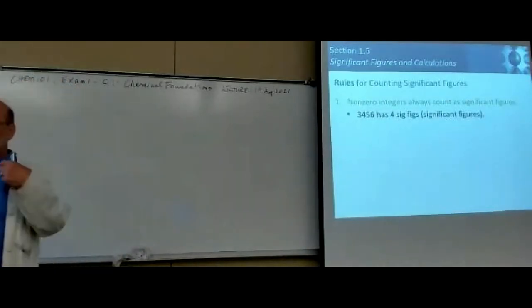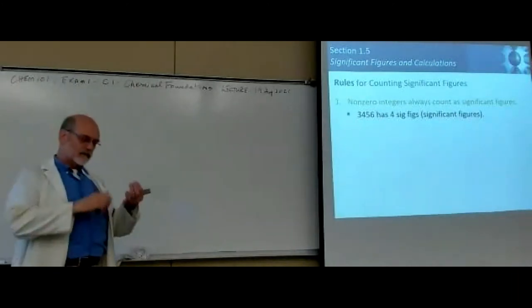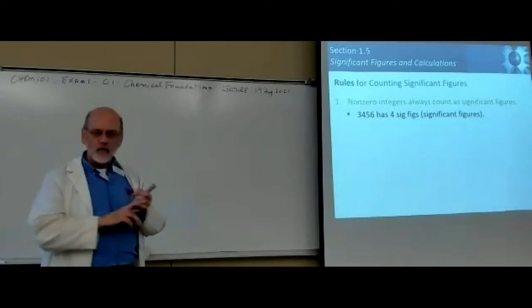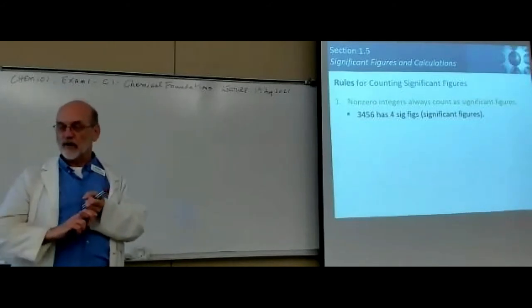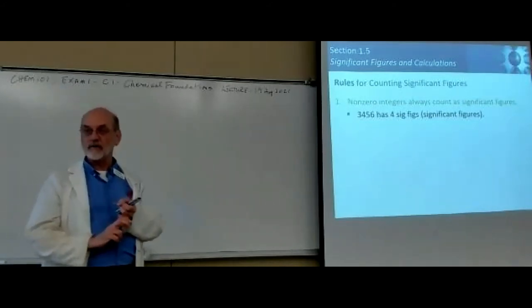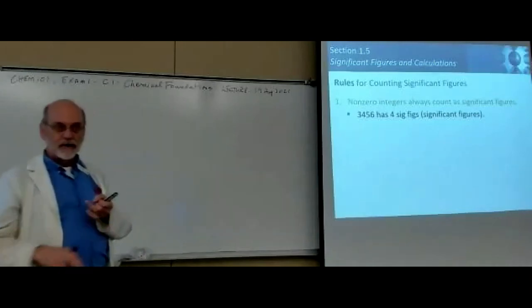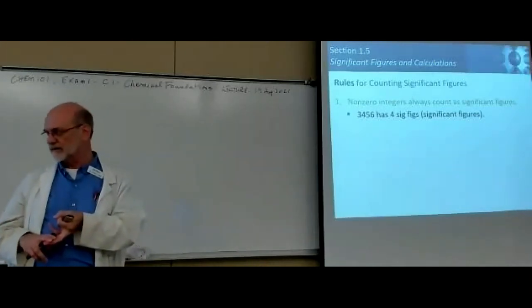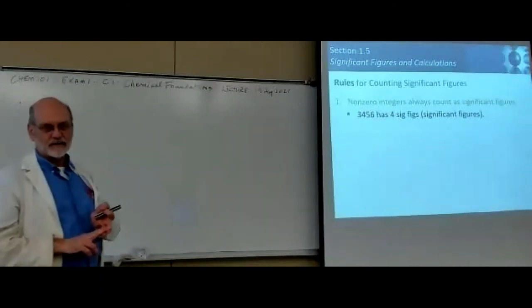We are missing one other possibility. It's either accurate or not accurate, or precise or not precise. That combination gives you four possibilities. So what's missing? Not precise but accurate. So what would that look like? Well, the bullseye is here. The average value is right there, that's accurate, but this is not precise.